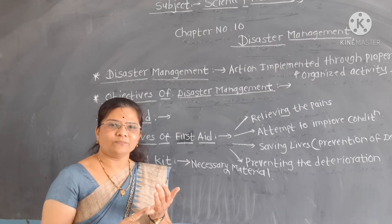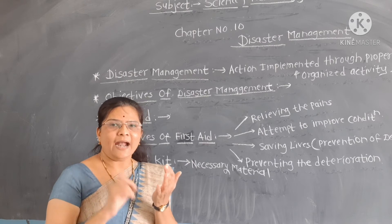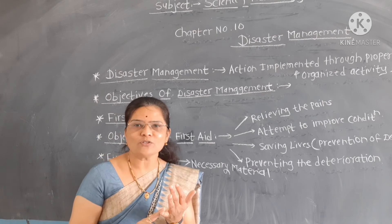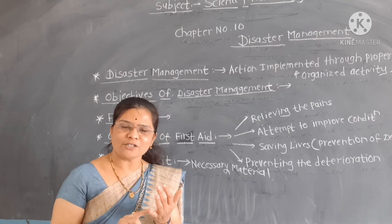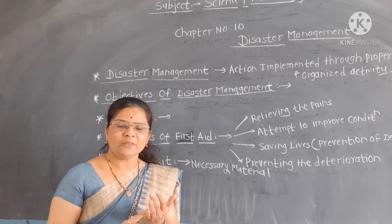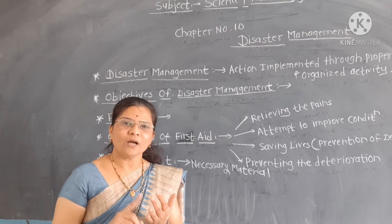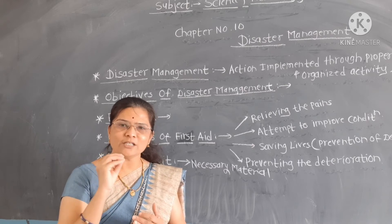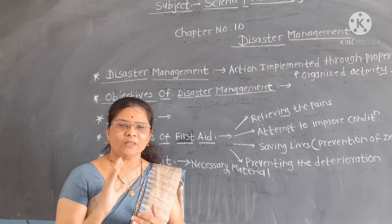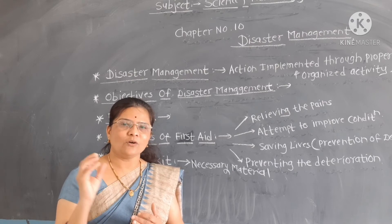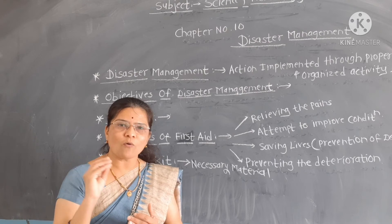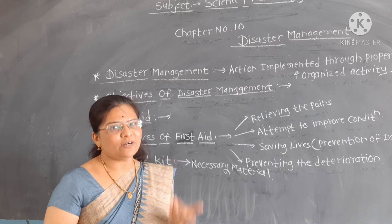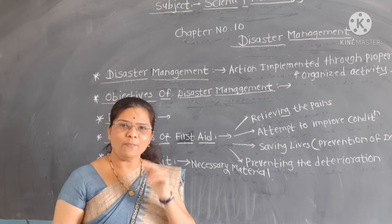The first aid box should contain bandages — both rectangular and circular bandages — antiseptic cream, Dettol and Savlon as antiseptic solutions, scissors, torch, thermometer, hydrogen peroxide, cotton, safety pins, small pins for pricking, bandages, and short and long cotton cloths. These items are present in the first aid box.